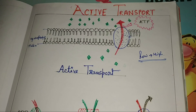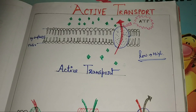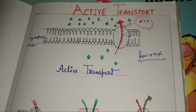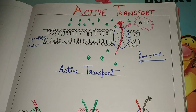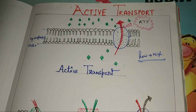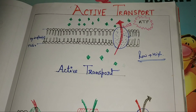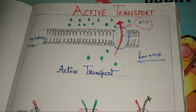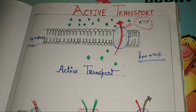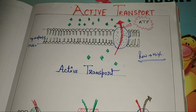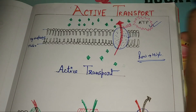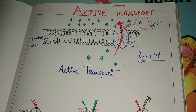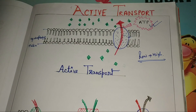That means they are passing against the concentration gradient. When the molecules need to be passed from low to high concentration, they need some energy. Without that energy they are unable to penetrate. That energy is ATP. ATP is required in the case of active transport.